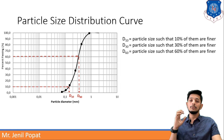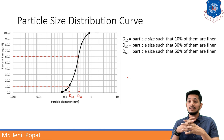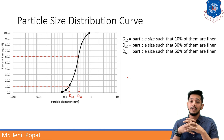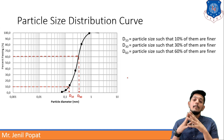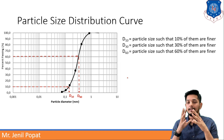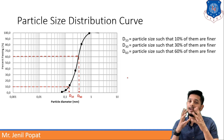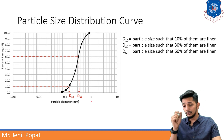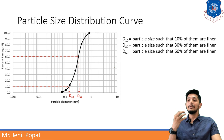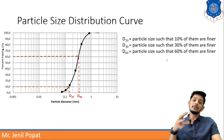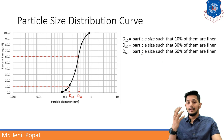D10 is defined as particle size such that 10% of them are finer than that. D60 is the particle size such that 60% of them are finer than that size. And same way D30 is defined. These three points D10, D30, and D60 are marked on the particle size distribution curve.